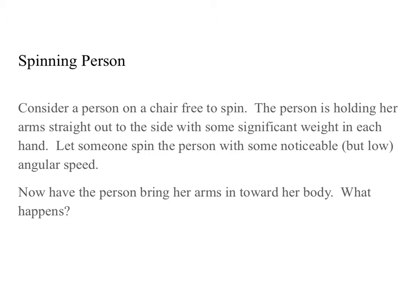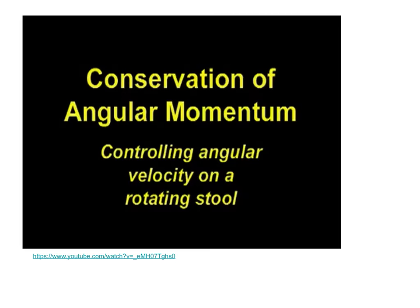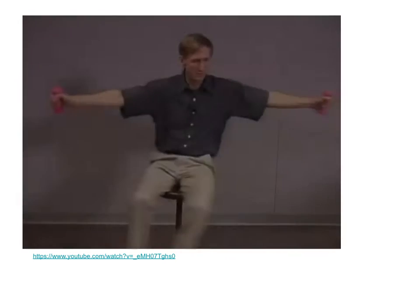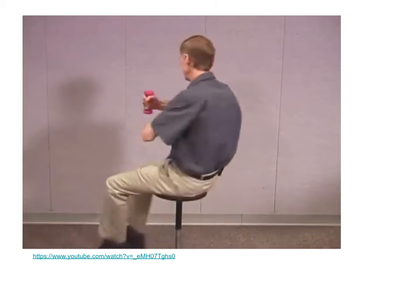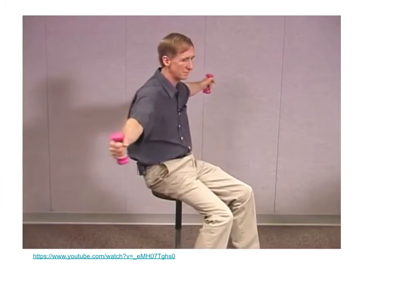Consider a person sitting on a chair free to spin. The person is holding her arms straight out to the side with some significant weight in each hand. Let someone else spin the person with some noticeable low angular speed. Now the person on the chair brings her arms in towards her body. What happens? You can see that as he brings his hands in, he speeds up. As he puts them out, he slows down.